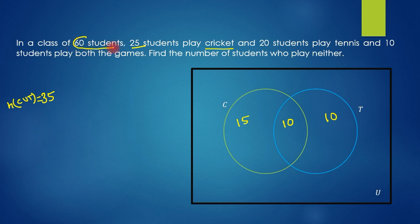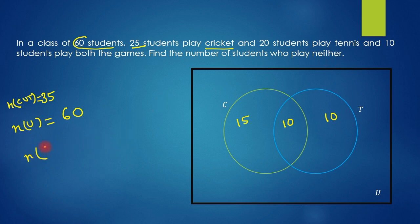So n(C∪T) is 35. The total number of students, the universal set U, is 60. Now we need to find the number of students who play neither, which is n(C∪T) complement.